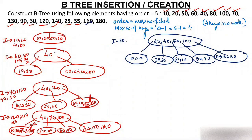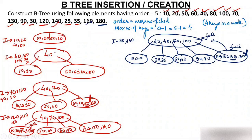Insert 160 — one space is left in the rightmost node, so 160 goes in easily. Now the rightmost node has 120, 130, 140, 160. Insert 180 — the rightmost node is already full. Virtually insert 180 after 160 — the middle element is 140. So 140 wants to go up to the root, but the root is also full with 25, 40, 70, 100. So the root must also split. Virtually add 140 to the root — the middle element becomes 70.